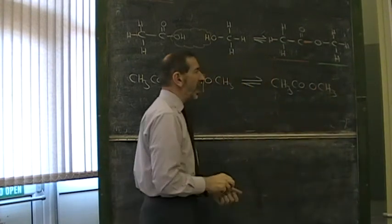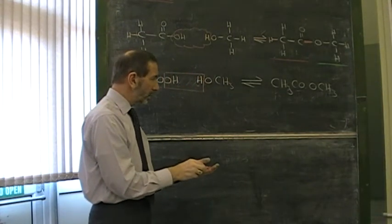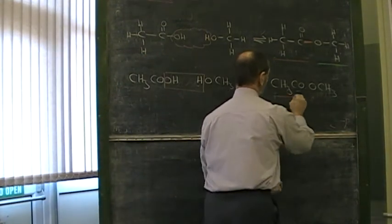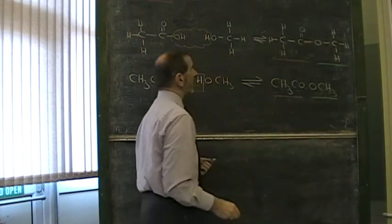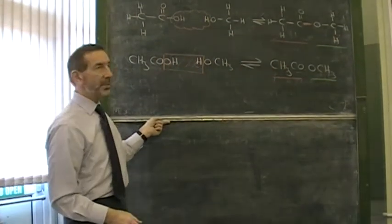There we are: CH3CO-O-CH3. An acid and an alcohol joint. What do we call some names?